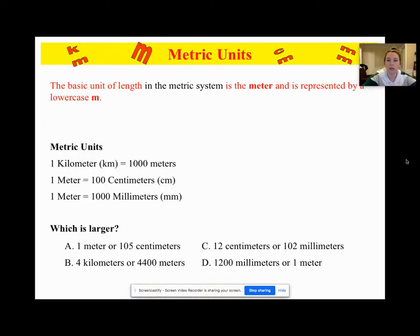Let's just start with the first base, which is the meter. The base unit of length is the meter and is represented by a lowercase m. So just a couple of things for you to look at. The metric units: a kilometer is equal to 1000 meters, one meter is equal to 100 centimeters, one meter is equal to 1000 millimeters. That's just moving the decimal place over back and forth.